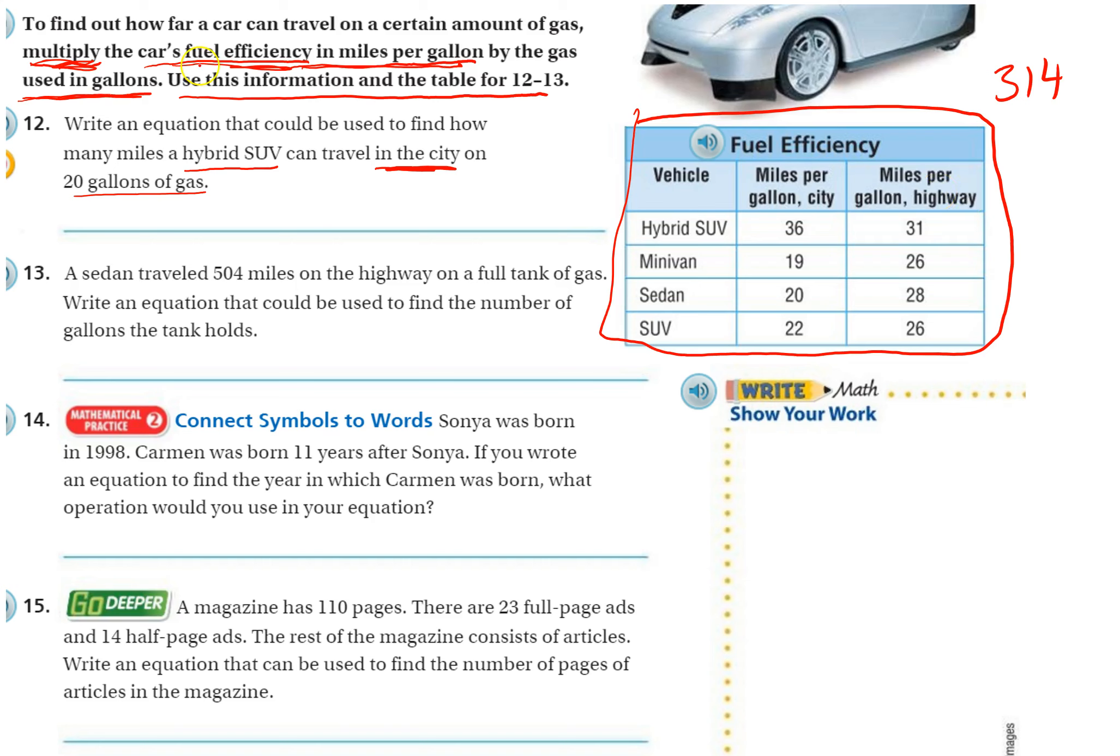So 20 gallons of gas, and that's in the city because notice it's in the city and highway is different. So they told us what to do: multiply. What do we multiply? Fuel efficiency. So the fuel efficiency in the city is 36. Multiply times, and then they also told us how many gallons of gas used: 20.